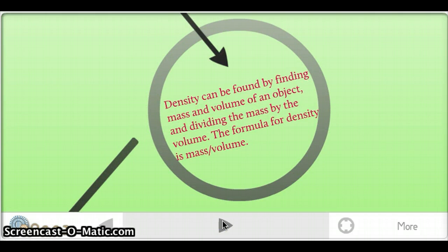How can density be found? Density can be found by finding mass and volume of an object, and then dividing the mass by the volume. The formula for density is mass divided by volume.